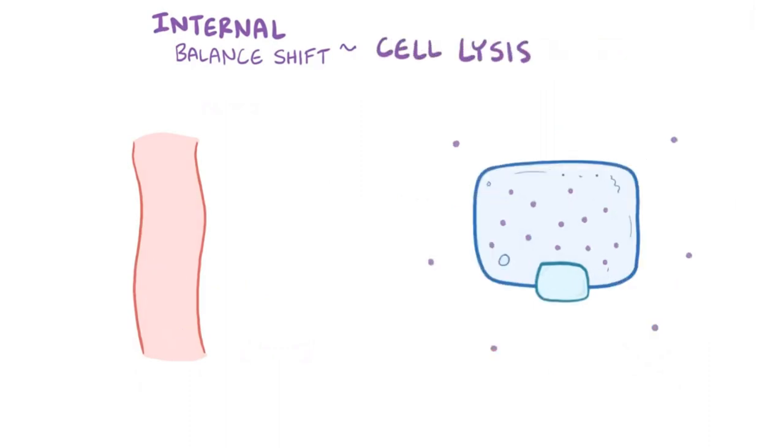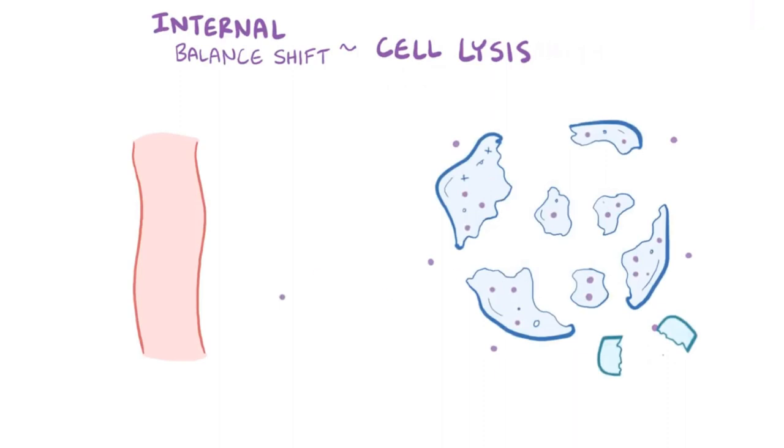Cell lysis is yet another cause of hyperkalemia. Since so much potassium is kept within the cell, when a large number of cells die or lyse, potassium is released into the blood, which causes hyperkalemia. Examples of large-scale cell lysis are severe burns, rhabdomyolysis or breakdown of skeletal muscle, and tumor lysis as a result of chemotherapy.